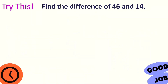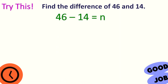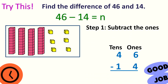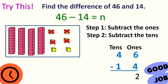Let's have one more example. Find the difference of 46 and 14. We will subtract 46 and 14 using base 10 blocks. 4 tens and 6 ones — write it in vertical form. Subtract the ones: 6 minus 4 — take away 4 ones from 6. It's 2. And then subtract the tens: 4 minus 1 — take away 1 ten. So, it's 3. 46 minus 14 is equal to 32.